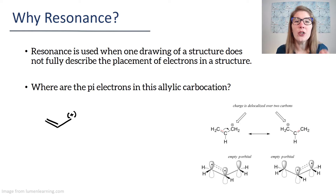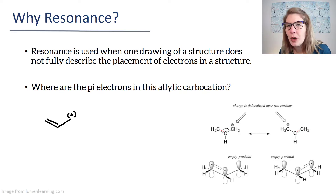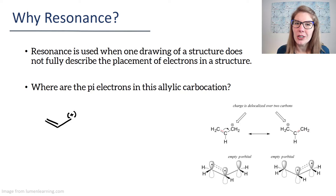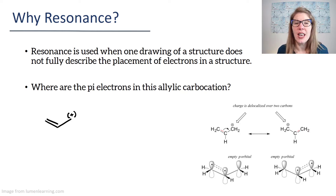Resonance is used when one drawing of a structure just isn't enough. What happens when we draw Lewis structures and bond line structures is we're trying to illustrate where the electrons are. That's what we're doing when we draw these pi bonds, these double bonds and triple bonds. When we put in the lone pairs, when we put in the formal charges, we're trying to indicate where the electrons are, and sometimes one structure doesn't do a good enough job. That is why we utilize resonance, which is really just a series of structures that we can look at on a sheet of paper and mentally average so that we can figure out where the electrons are.